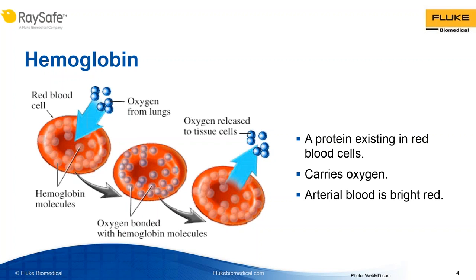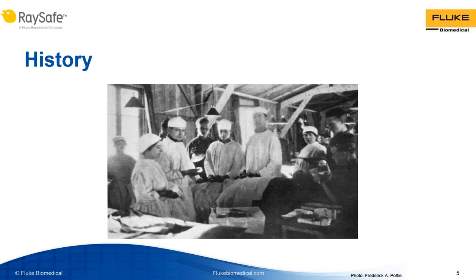Pulse oximetry is a very important measurement for patients. It gives a very quick determination if patients are having trouble getting oxygen into their bloodstream, so if they have trouble it can be treated as soon as possible. Here's a brief note about the history of pulse oximetry. Before pulse oximetry, there was no quick way to analyze the oxygen content of blood. They could do it invasively by drawing real blood and running tests on it, and that took time that patients couldn't necessarily afford.